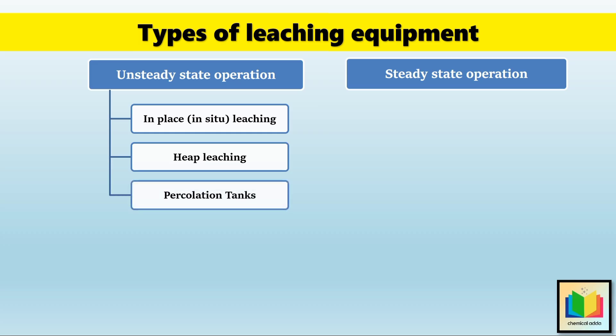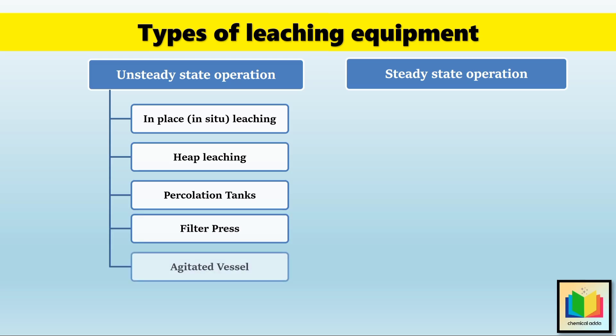The next type is percolation tanks, where solvent flows through a tank filled with solid material, allowing extraction. Then filter press leaching, which is carried out by using pressure to force the solvent through the solid material for faster extraction. Then the agitated vessel, which is a tank with stirrers that mix the solid and solvent, improving leaching efficiency. The last type of unsteady state operation is the shank system.